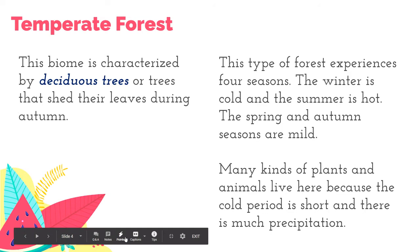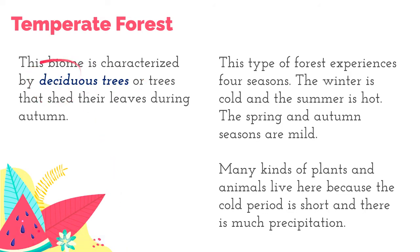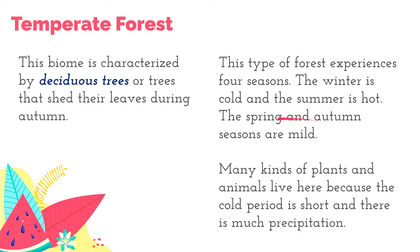The temperate forest is a biome characterized by having deciduous trees. When we say deciduous, these are trees that shed their leaves during autumn. That's because temperate forests are located in areas that experience four seasons. In those regions, the winter is cold and the summer is hot, while the spring and autumn seasons are relatively mild in terms of temperature.